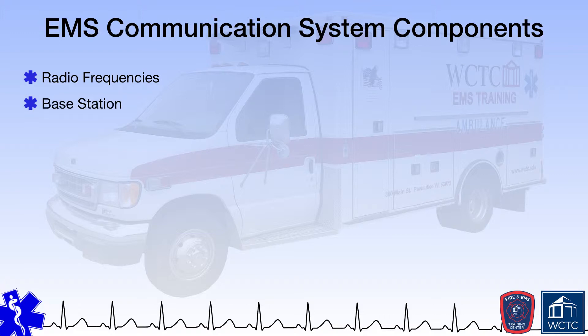The first and most important physical piece of a robust and reliable radio communication system is the base station. A base station is located at a fixed location and utilizes antennas, geography by ideally being located in a high area, and significant power to extend its range. These base stations are typically configured to operate on multiple frequencies and bands, some may incorporate repeaters to further extend their range, and digital capabilities are being introduced and upgraded all the time to improve communications.